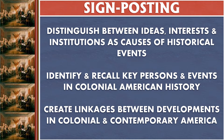Secondly, their interests, which means different people want different things. So why were the colonists happy to be colonists and fight with England against France in the French and Indian War only two decades before the American Revolution? And how did their interests change so that they thought they were better off if they were independent and not connected to the most powerful country in the world, the British Empire at the time?